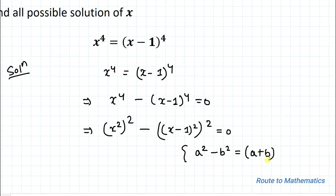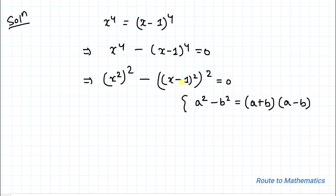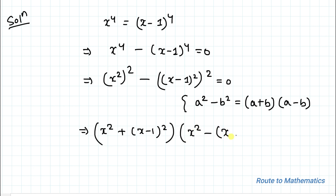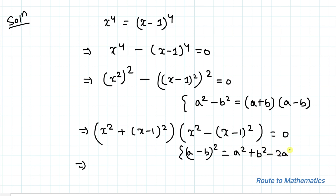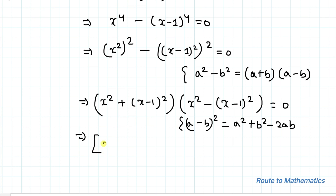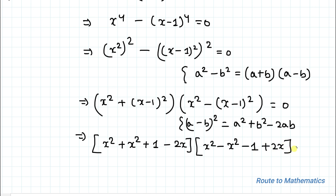Here we apply the algebraic identity a squared minus b squared equals (a plus b)(a minus b), considering a as x squared and b as (x minus 1) squared. This gives us (x squared plus (x minus 1) squared) multiplied by (x squared minus (x minus 1) squared) equals 0. We then apply the identity (a minus b) squared equals a squared plus b squared minus 2ab.